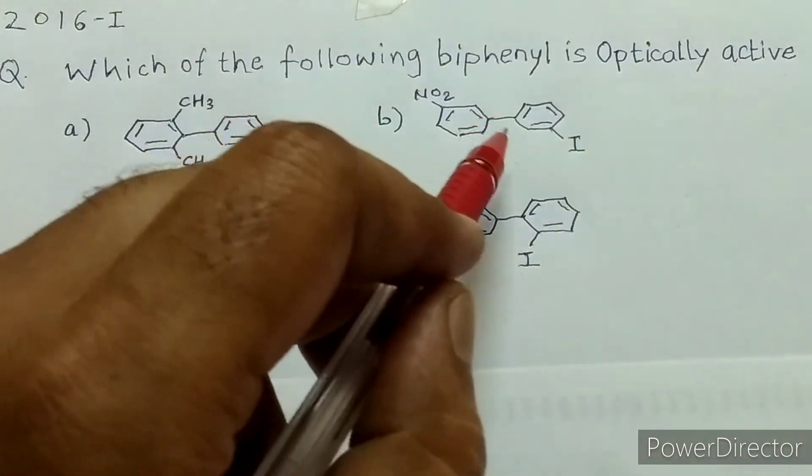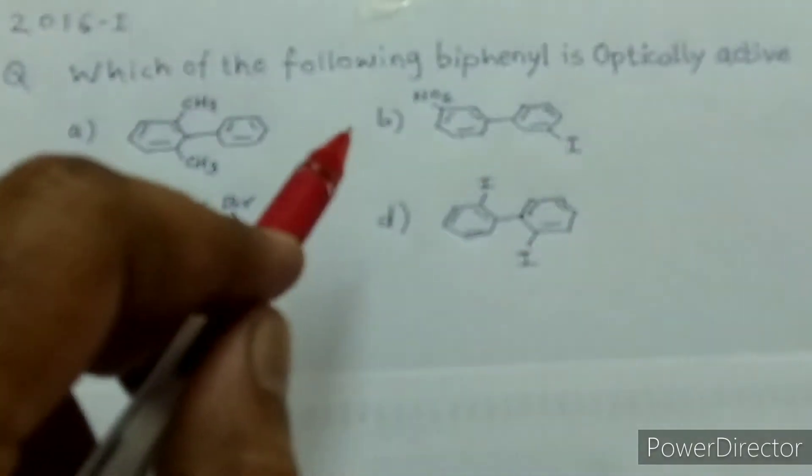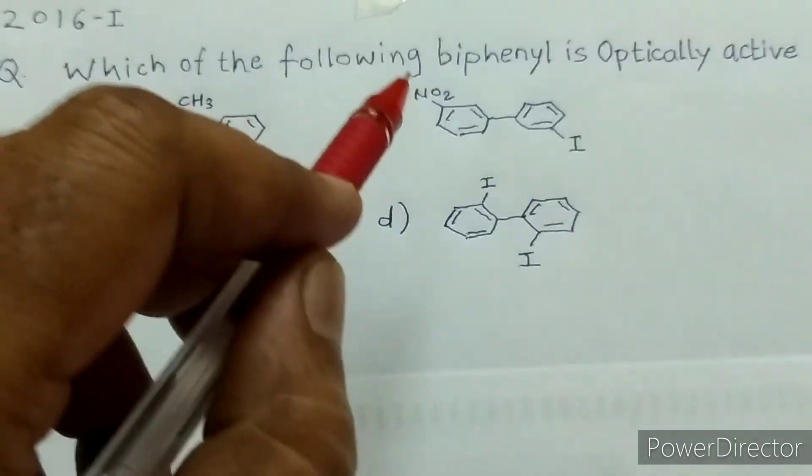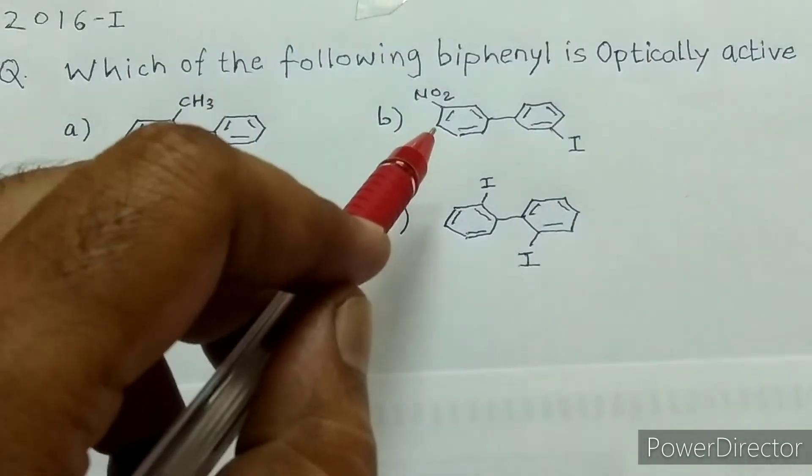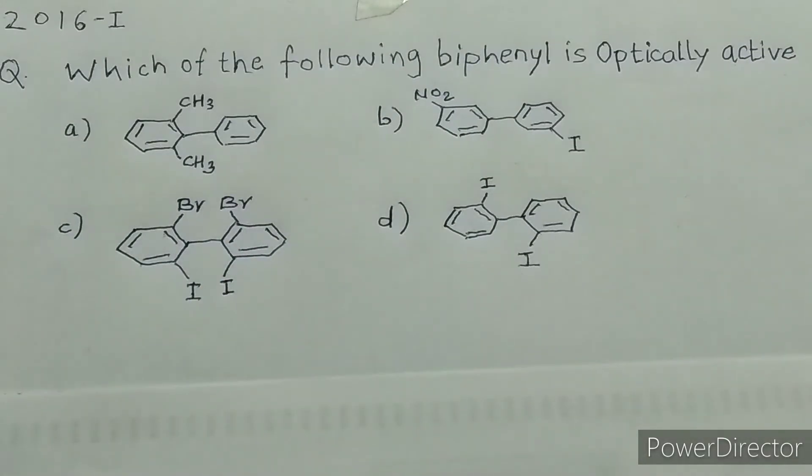In option B, if you see, this is meta position and this is also meta position. Therefore, this is not an ortho-substituted biphenyl, so this is also out of contention. We don't even need to think about this.